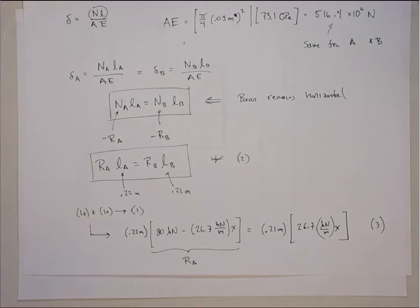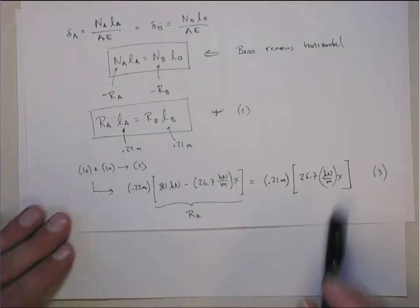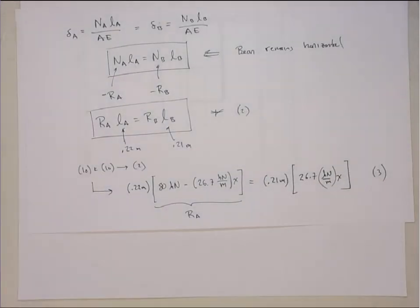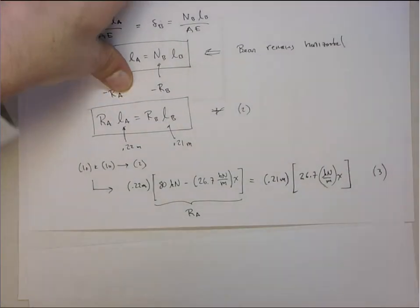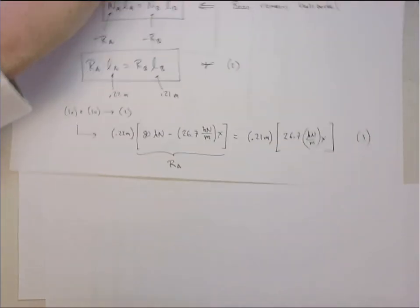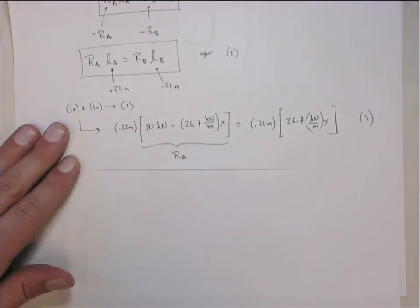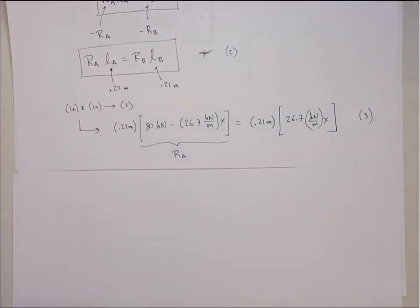So putting 1A and 1B into equation 2, we'll get the following. We get 0.22 meters times RA, which from before is 80 kilonewtons minus 26.7 kilonewton meters times x. So this is RA. That has to equal 0.21 meters times RB. And from before, we got RB is 26.7 kilonewton meters times x. So I'll call this equation 3. So it's just an algebra equation we now have to solve. We solve equation 3 for x. I guess like the cooking shows, I probably could have done this like offline. Solve this and then give you the result because it really is just algebra at this point. But let's do it.